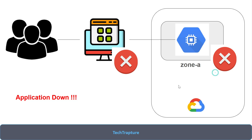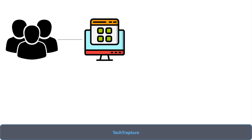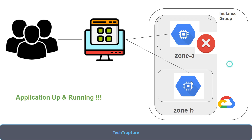Now let's see how we can achieve high availability with instance groups. Taking the same example with a different setup: the same set of users accessing a web application, but now this application is deployed on an instance group. I have one virtual machine in Zone A and one in Zone B, both part of the instance group. Traffic is distributed across both zones. If Zone A crashes, users are still accessing the application from Zone B — the application is still up and running. This is how our application is highly available across multiple zones.